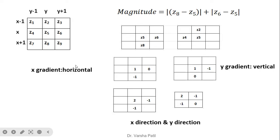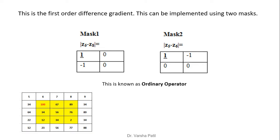To find both horizontal and vertical edges simultaneously, we add the x gradient and y gradient masks together: 1+1=2, 0+(-1)=-1, (-1)+0=-1, giving a 2x2 mask [2, -1; -1, 0]. The sum of coefficients is zero, satisfying the high frequency mask characteristic. This is the first order difference gradient mask, also known as the ordinary operator.